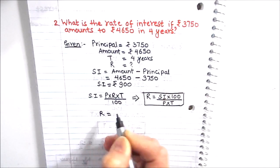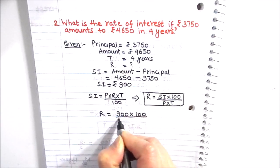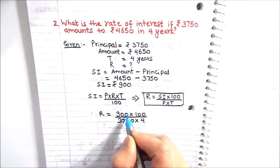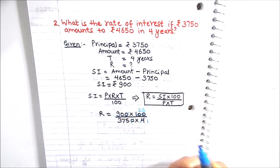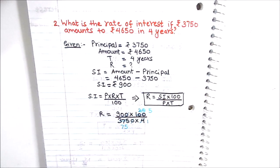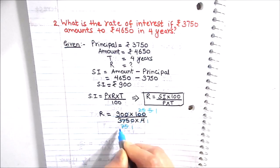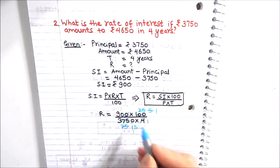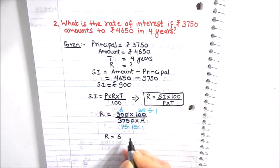So R = 900 × 100 ÷ (3750 × 4). Simplifying: the zeros cancel, then 4 × 25 = 100, and 5 × 75 = 375. Since 75 and 5 share a factor of 5, this reduces further, leaving 90 in the numerator and 15 in the denominator. Since 15 × 6 = 90, the result is 6. Therefore, the rate of interest is 6%.